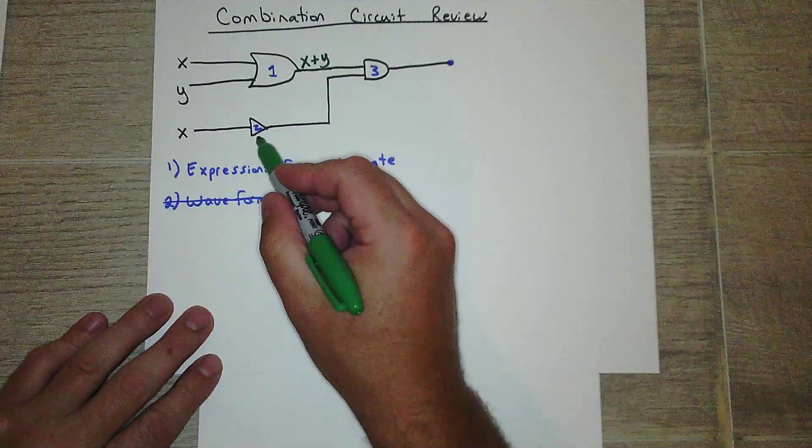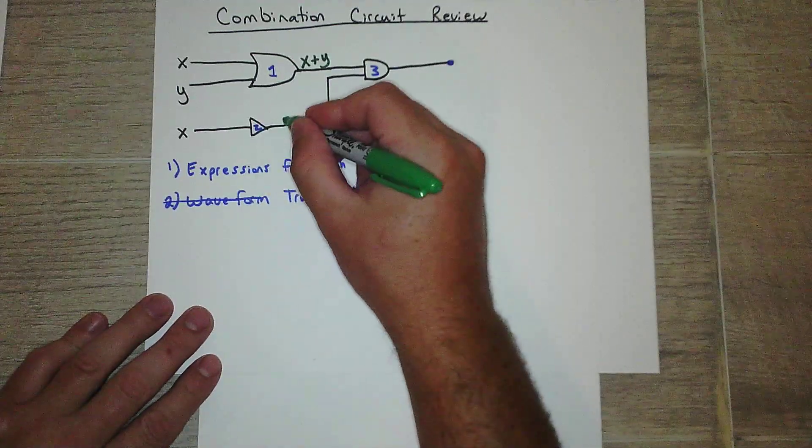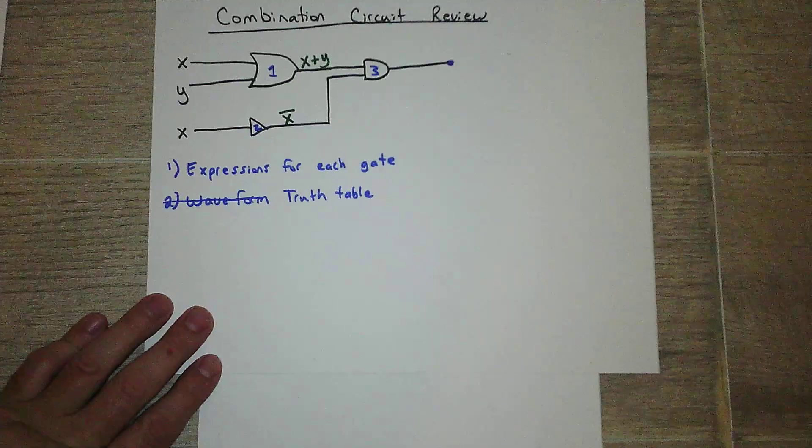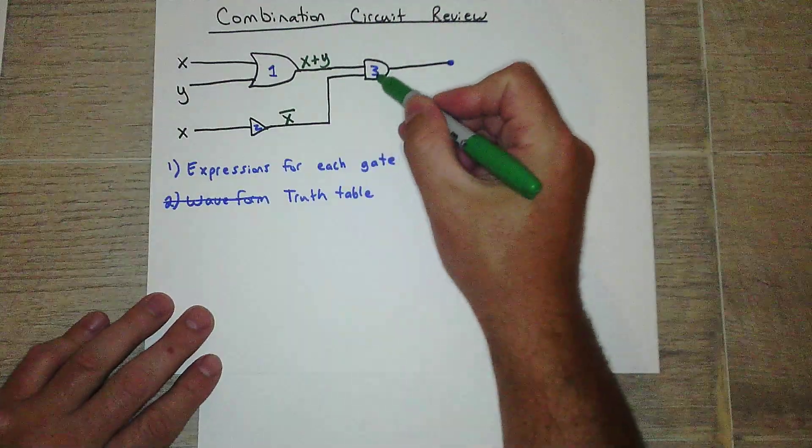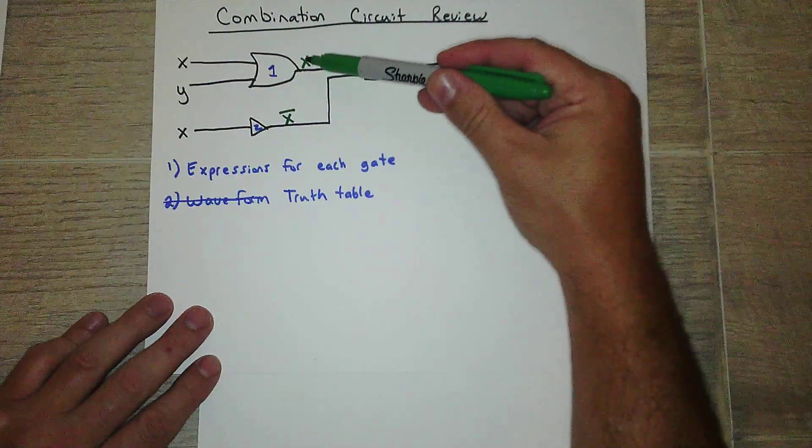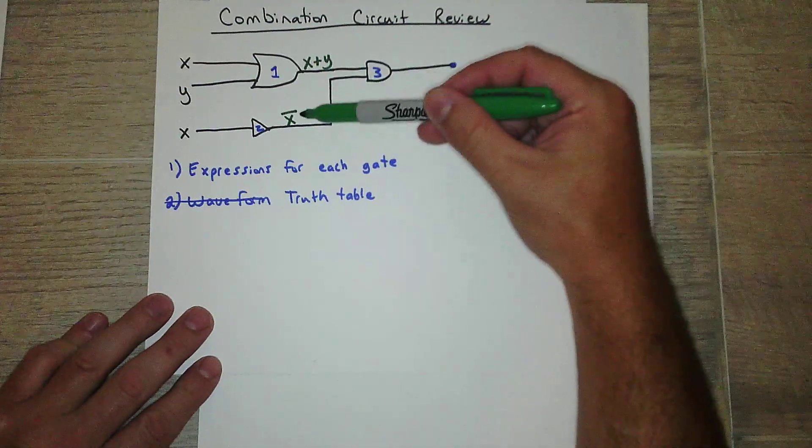Okay, this is a not gate. So my input's x, so my output is not x. Okay, this is an and gate. Well, that's my two inputs. My input is x or y, and my other input is not x.